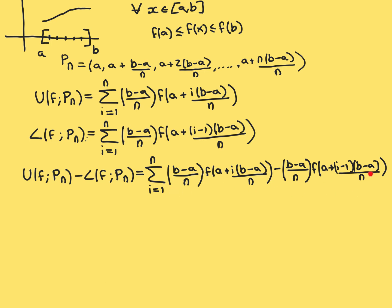Let me talk you through what I've done here. I've taken the upper sum and subtracted the lower sum. They're both sums from i equals 1 to n, so I can combine them. I get the sum from i equals 1 to n of: (b minus a)/n times f evaluated at a plus i(b minus a)/n, minus (b minus a)/n times f evaluated at a plus (i minus 1)(b minus a)/n. This is the general formula for any natural number n.